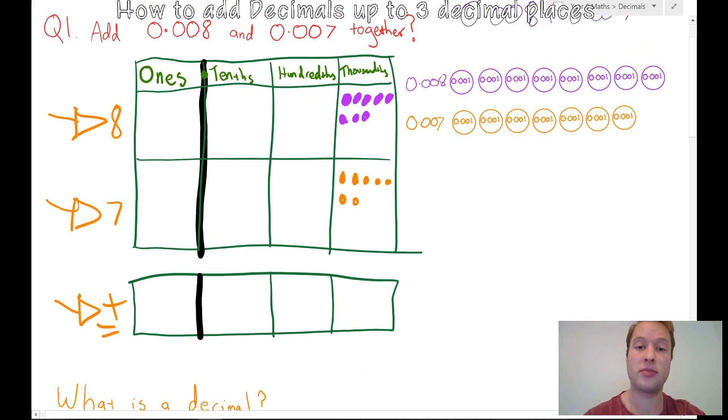We need to now count them. I've got 1, 2, 3, 4, 5, 6, 7, 8, 9, 10, 11, 12, 13, 14, 15.